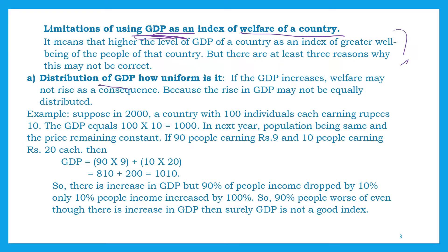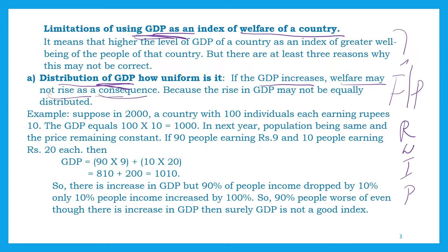GDP is distributed to factors of production in the form of rent, wages, interest, and profit. If GDP is equally distributed, then GDP is a good indicator. But the welfare may not rise as a consequence of GDP increase, because rising GDP may not be equally distributed. If it is not equally distributed, then GDP is not a good indicator.